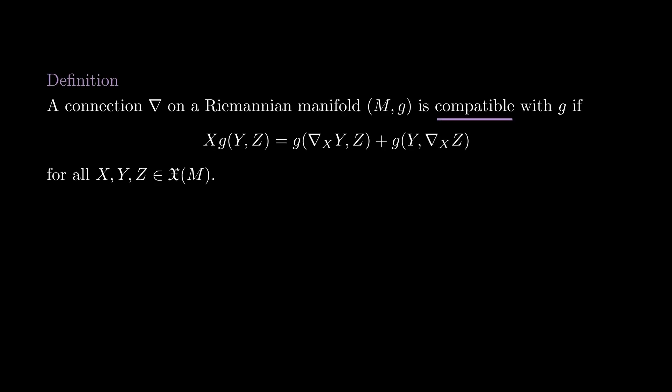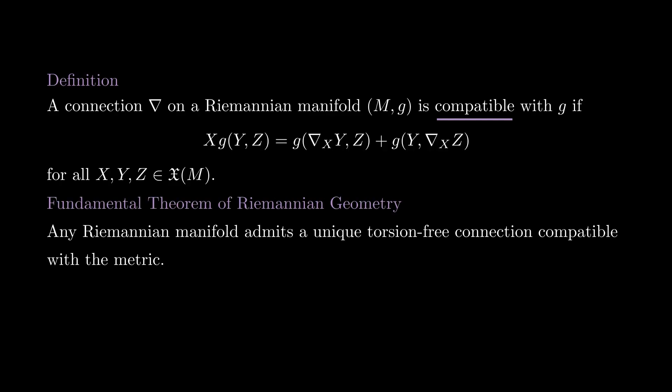Now you may have noticed that so far we haven't talked about Riemannian manifolds in this entire lesson. When we are working on a Riemannian manifold, we will want our connection to be compatible with our Riemannian metric. We say that a connection on a Riemannian manifold is compatible with the metric if the Leibniz property holds — meaning that for any three vector fields X, Y, and Z, the derivative of the inner product of Y and Z in the direction of X equals g(Nabla_X Y, Z) plus g(Y, Nabla_X Z). Now we are ready to introduce the fundamental theorem of Riemannian geometry: for any Riemannian manifold, there is a unique connection that is compatible with the metric and torsion-free. This connection is called the Levi-Civita connection.